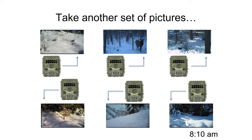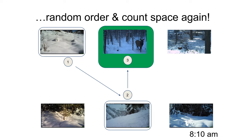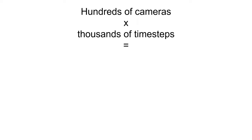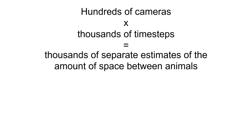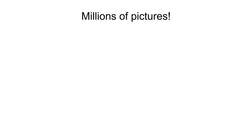We then take another set of pictures at the next time step — notice the time in the bottom right is 10 minutes later. We randomly mix up the camera order again so we're not always starting with the same camera, and sequentially count view sheds again until the species is detected. This time it takes three view sheds to detect an elk. We repeat this process across hundreds of cameras and thousands of time steps, which produces thousands of separate estimates of the amount of space between animals on the landscape. We then use those estimates and the mathematics described in a peer-reviewed publication to estimate both the average density of animals per camera and the total abundance of the species of interest in the study area.